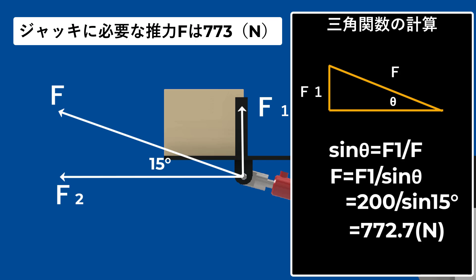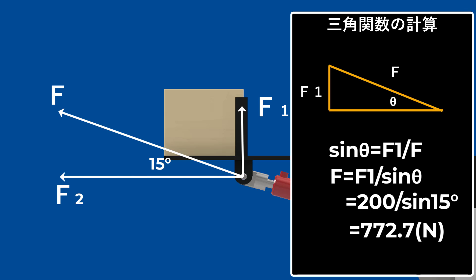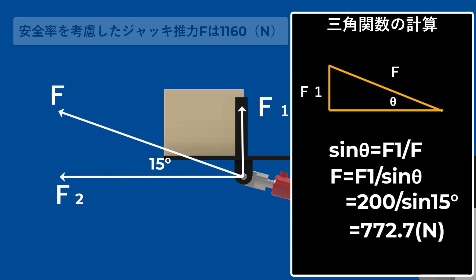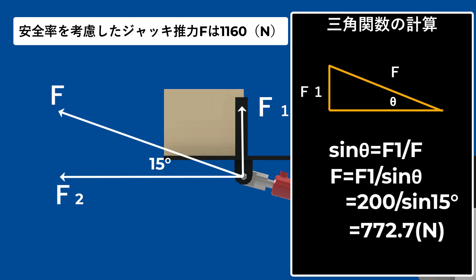よって、このジャッキに必要な推力は、約773Nという風に算出されました。そして、この構造に対して、機械損失があるので、ヒンジピンのところの摩擦なんかを考えたとして、安全率を例えば50%見てみましょう。そうすると、773×1.5で、約1160Nの推力が必要だとわかります。